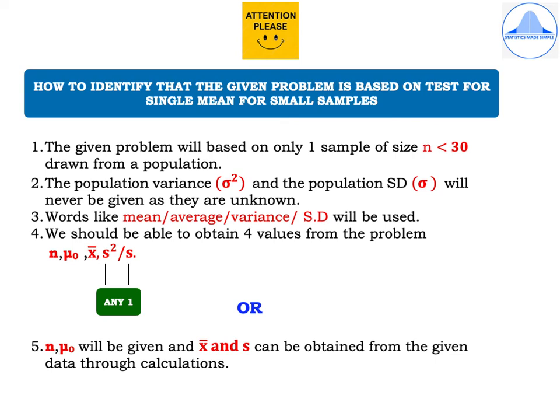Words like mean, average, variance, standard deviation will be used. We should be able to obtain four values from the problem, i.e. n, mu0, x bar, and either s square or s. Sometimes if these four values are not given in the problem, n and mu0 will be given, and x bar and s can be obtained from the given data through calculations.